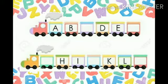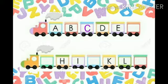Kids, which is the first letter? The first letter is A. Next, B. What comes after B? After B comes C. Then D, E and F. After F comes G.